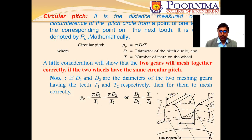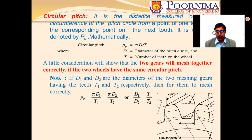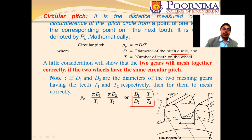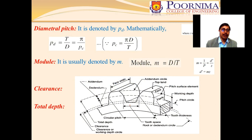The circular pitch is the distance measured on the circumference of the pitch circle from a point on one tooth to the corresponding point on the next tooth. It is usually denoted by pc, where pc = πD/T, with D being the diameter of the pitch circle and T the number of teeth. For two meshing gears, D1/D2 = T1/T2.